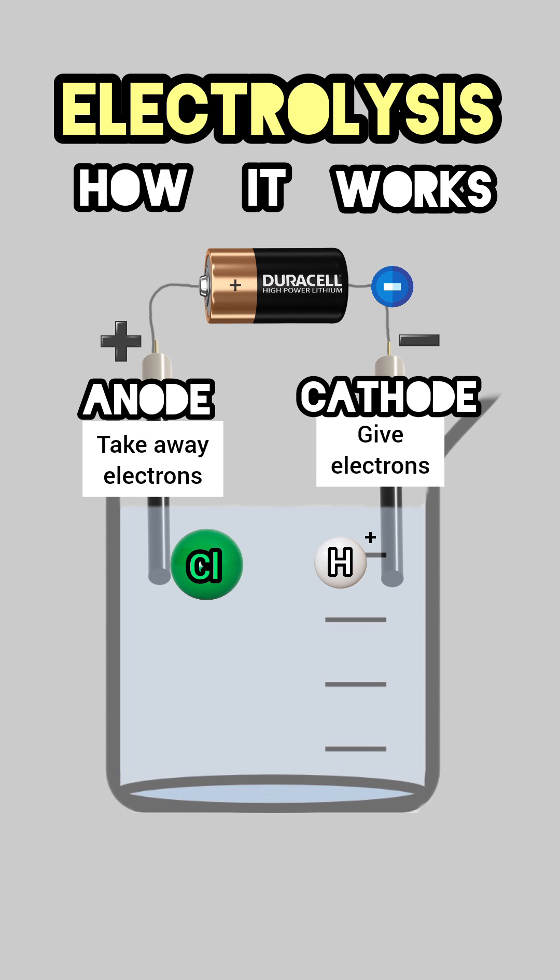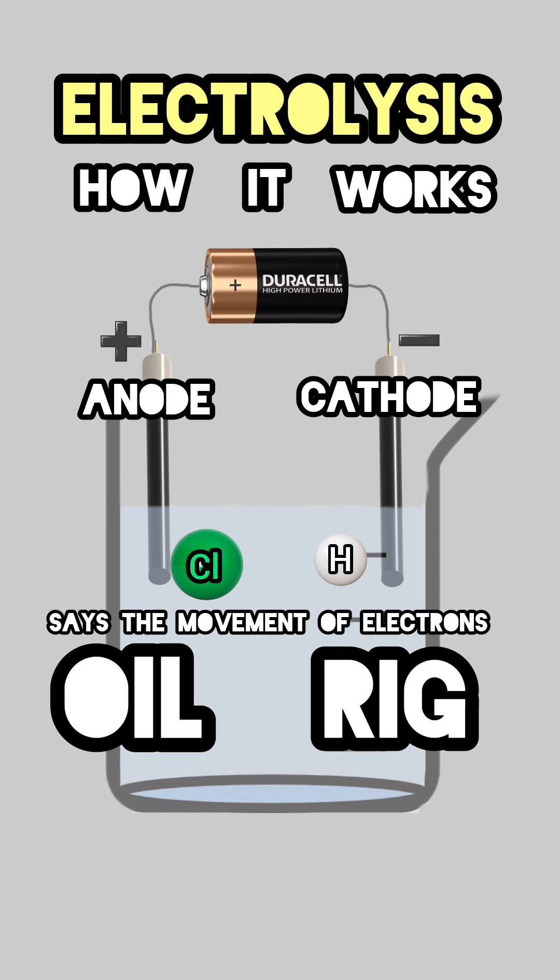And cathodes give them back. That's the basics of this process. I'll just leave you with this saying: OIL RIG says the movement of electrons. Oxidation is loss and reduction is gain.